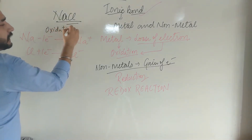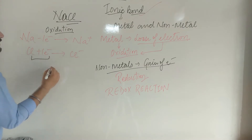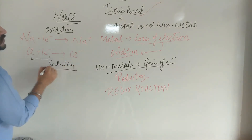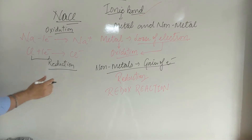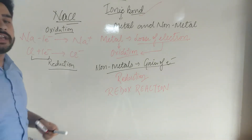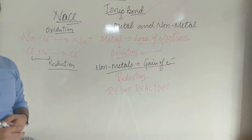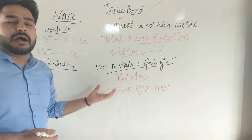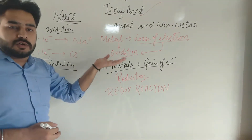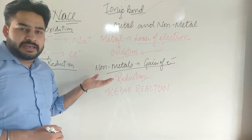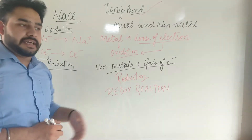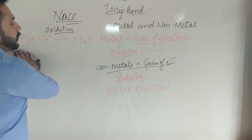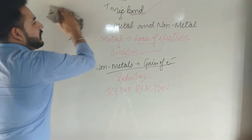The gain of electron in Cl is called reduction. The process in which oxidation as well as reduction takes place is called a redox reaction. So NaCl is an ionic compound, and in ionic compounds, redox reactions happen — both oxidation and reduction occur. Next topic is covalent compound.